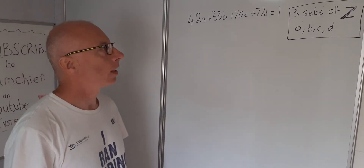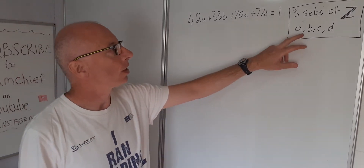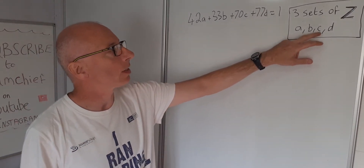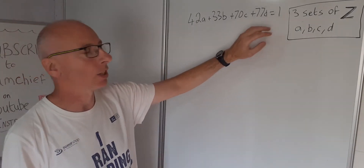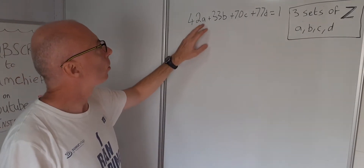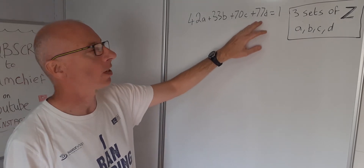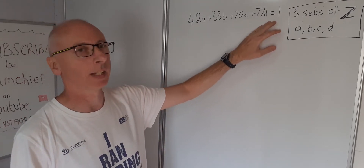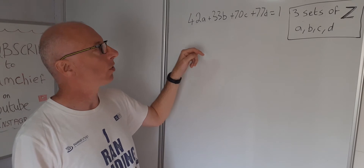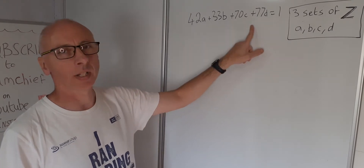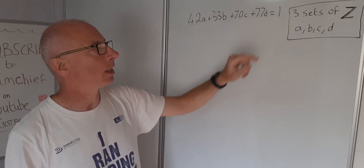In this question we need to find three sets of integers for A, B, C, and D that meet the equation 42A + 33B + 70C + 77D = 1. I've solved this using Euclid's algorithm in the description, but today we're going to use something a little bit different.